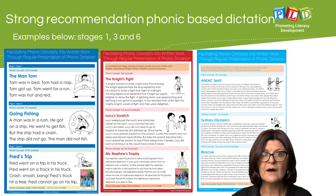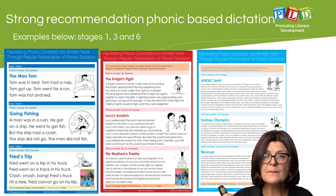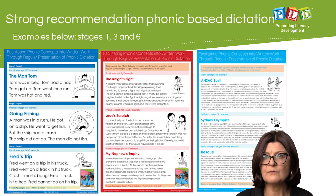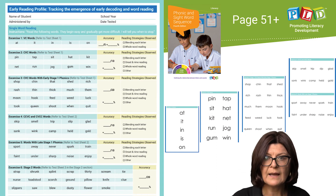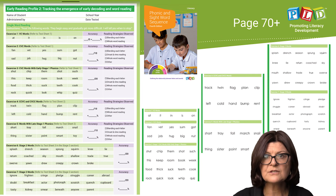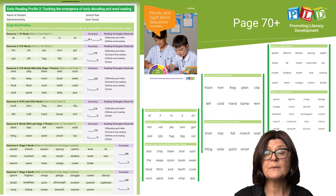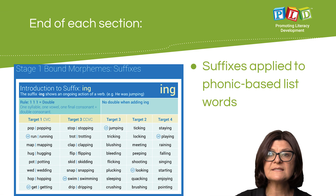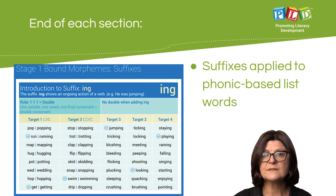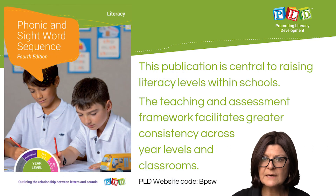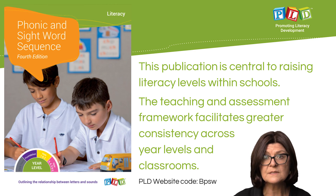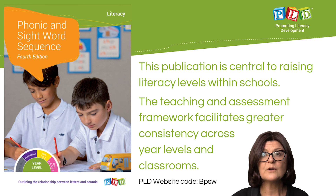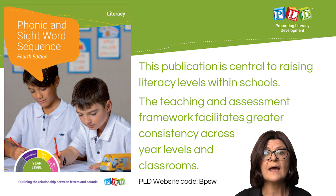There is a strong recommendation for phonic-based dictation, with examples for each level provided within the book. Reading assessments are included because the majority of junior primary students require decodable reading material in the early stages of reading. The early reading profiles found at the end of Stage 1 and at the end of Stage 2 on page 70 assist in the provision of targeted decoding reading material and provide data on student progress. At the end of each section there are suffixes applied to the phonic-based list words. This resource is central to raising literacy levels within schools, and the teaching and assessment framework facilitates consistency across year levels and classrooms.